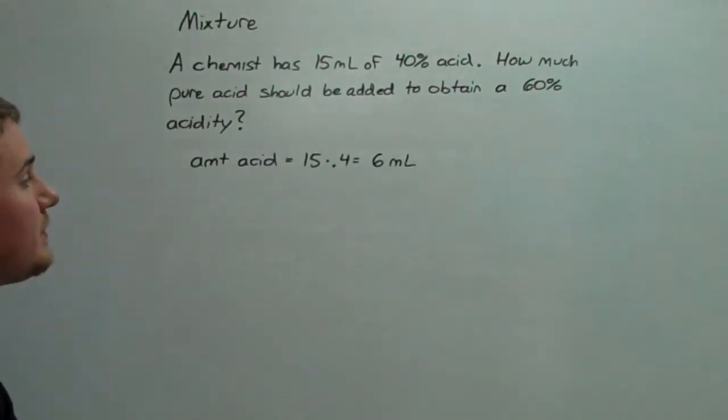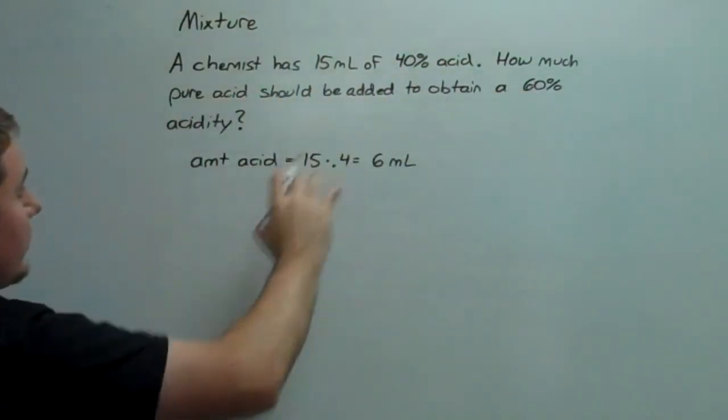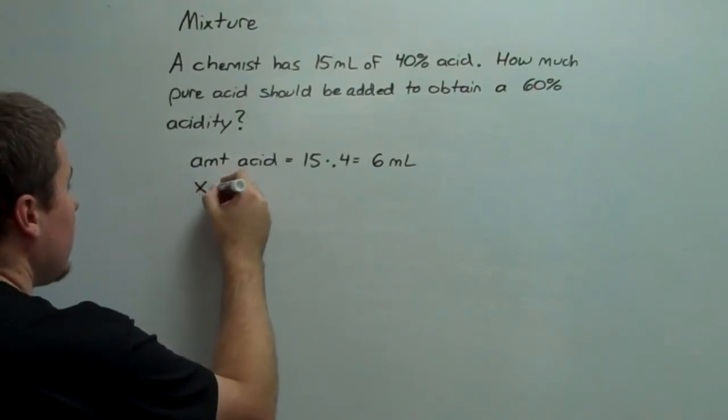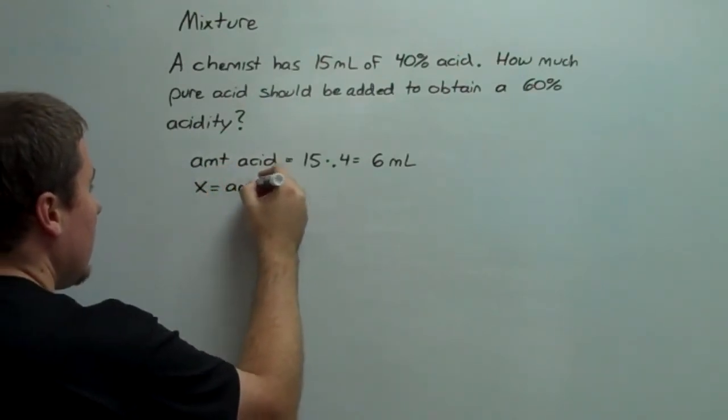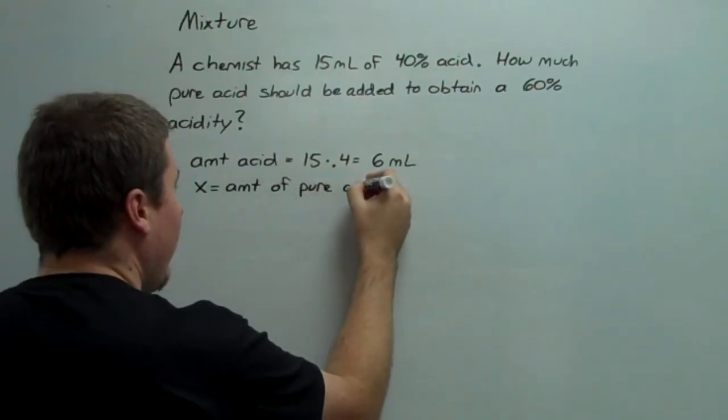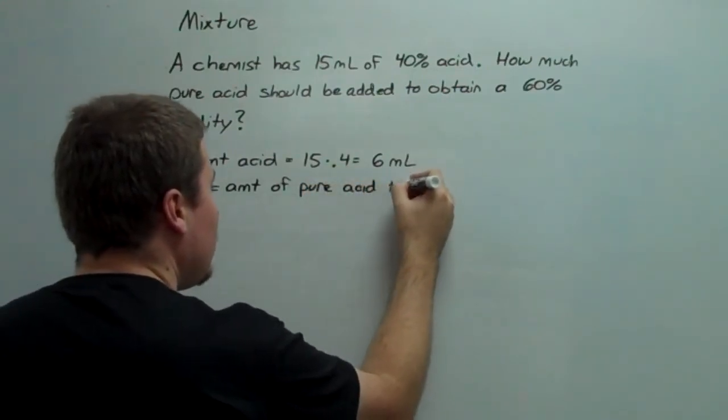Now that we know that we have 6 milliliters of acid, we can get to the process of problem solving. So, the question is, how much pure acid should be added? Well, that sounds like a great variable. So, x is equal to the amount of pure acid to be added, to separate it from the amount of pure acid that we have on hand.